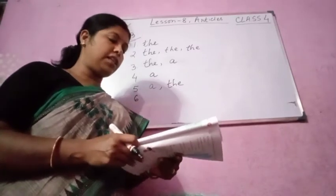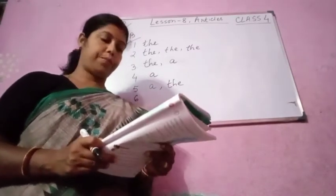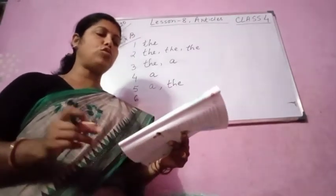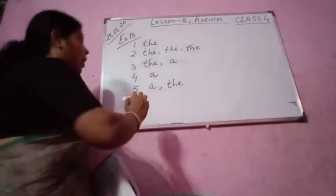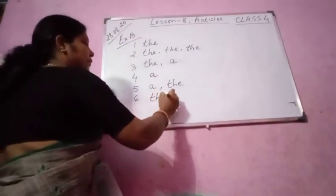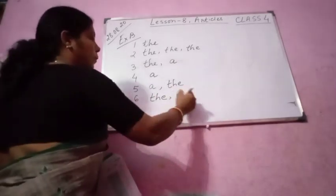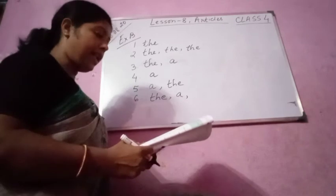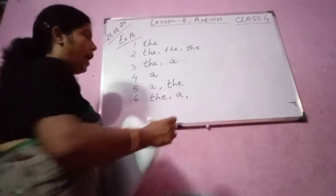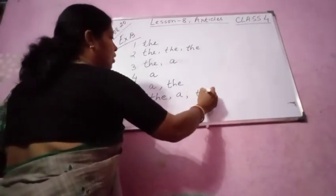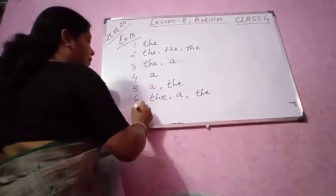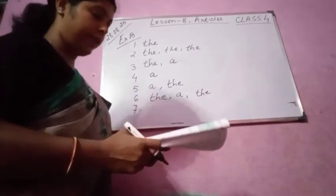Yolks until they become thick and lemon colored. Now number six, add the sugar gradually. Add the sugar. Because there is specific amount of sugar. Add the sugar gradually using a spoon. Then add the lemon juice and rind. Add the lemon juice also. This is also particular, specific. Lemon juice and rind.